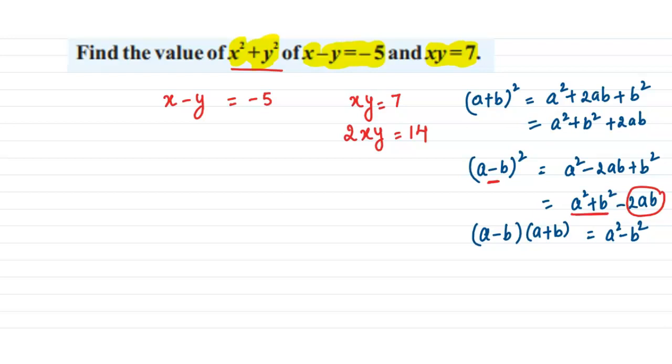Let's see. For this we have to square both sides. Squaring both sides will give us x² + y² - 2xy which would be equal to 25. Now this part is known to us.